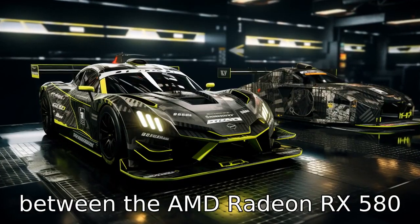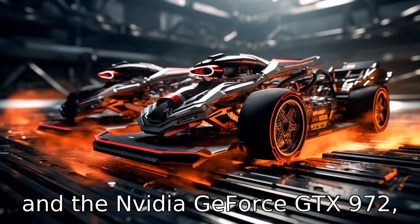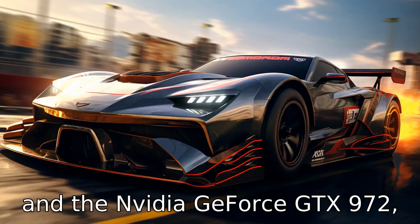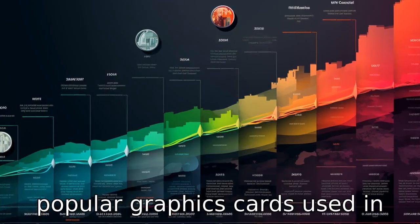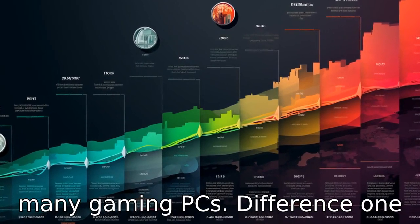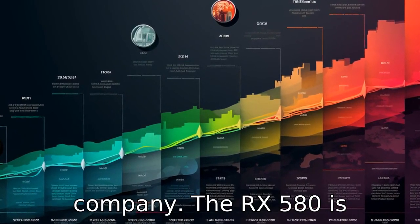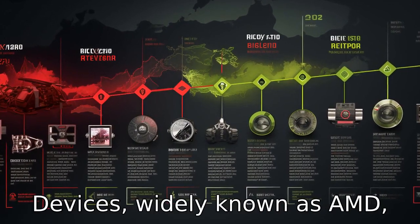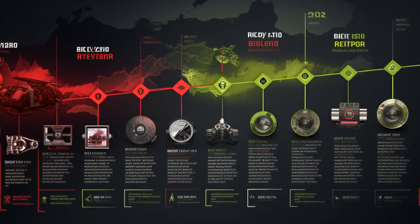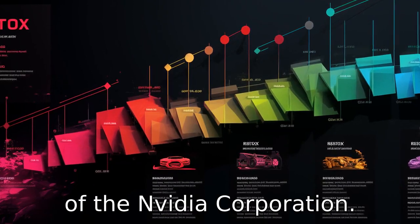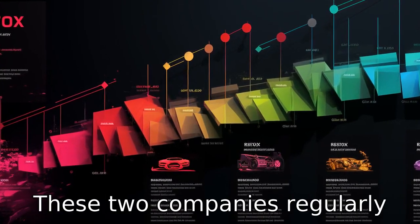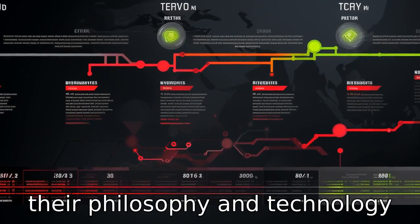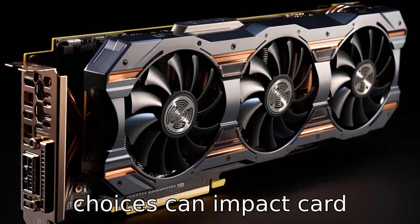Let's compare the differences between the AMD Radeon RX 580 and the NVIDIA GeForce GTX 970, two popular graphics cards used in many gaming PCs. Difference 1 refers to the manufacturing company. The RX 580 is manufactured by Advanced Micro Devices, widely known as AMD, while the GTX 970 is a product of the NVIDIA Corporation. These two companies regularly compete in the GPU market, and their philosophy and technology choices can impact card performance.